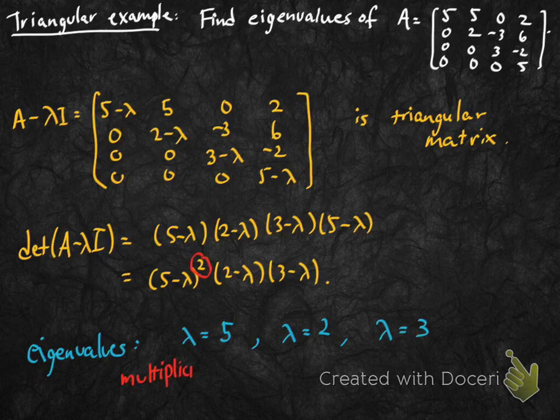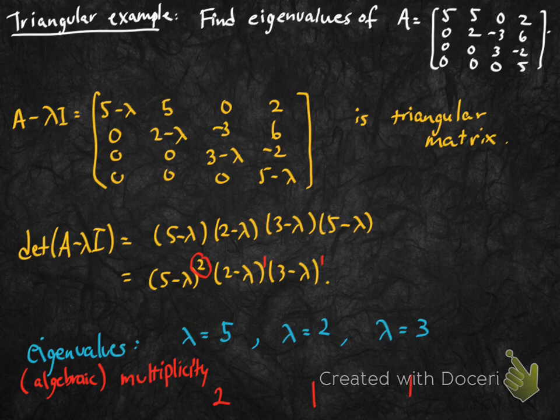Notice the 5 minus lambda term has an exponent of 2, so we say the algebraic multiplicity of the eigenvalue 5 is 2. Likewise, the multiplicity of 2 is 1 and the multiplicity of 3 is 1.